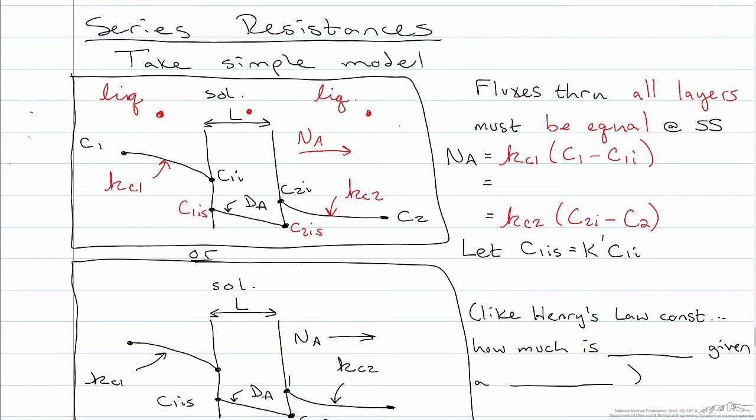And then through the membrane, we have the dissolved phase concentrations. The proportionality constant there is the diffusivity over the thickness of the membrane, and the concentration difference is C1Is minus C2Is.